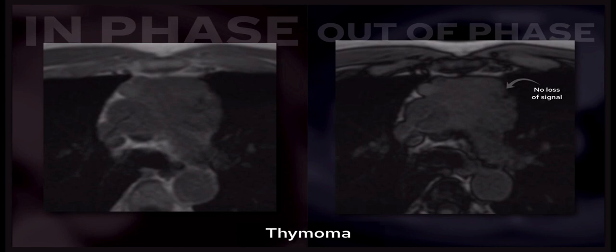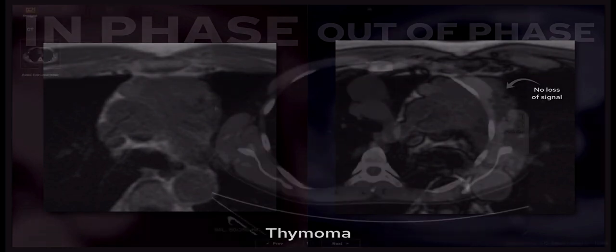Contrast that with this case of a thymoma: here we have a lobulated lesion which has not lost signal on the out-of-phase images. We cannot confirm intralipid content and cannot say for sure that this is thymic hyperplasia. This turned out to be a thymoma.